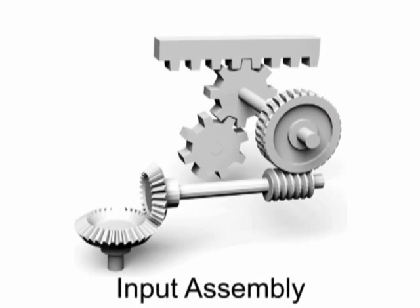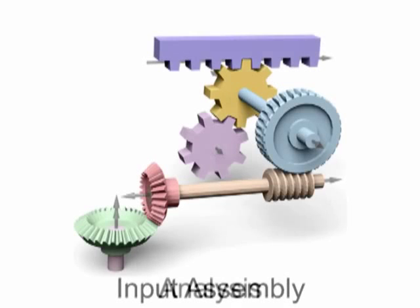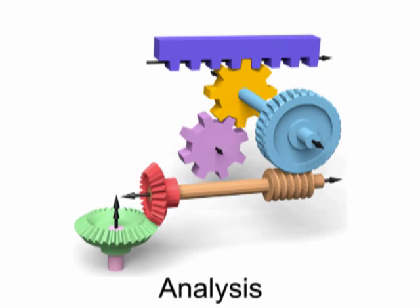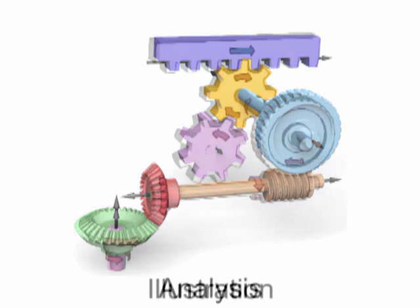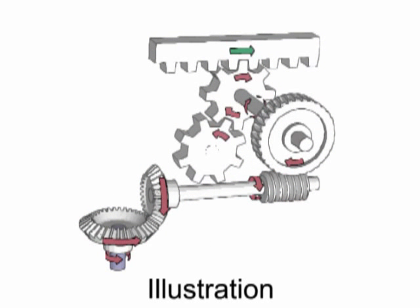In this paper, starting with a 3D CAD model of an assembly, we first geometrically analyze the motions of individual parts and the interactions between the parts. Then we use this information to generate how things work style depictions.